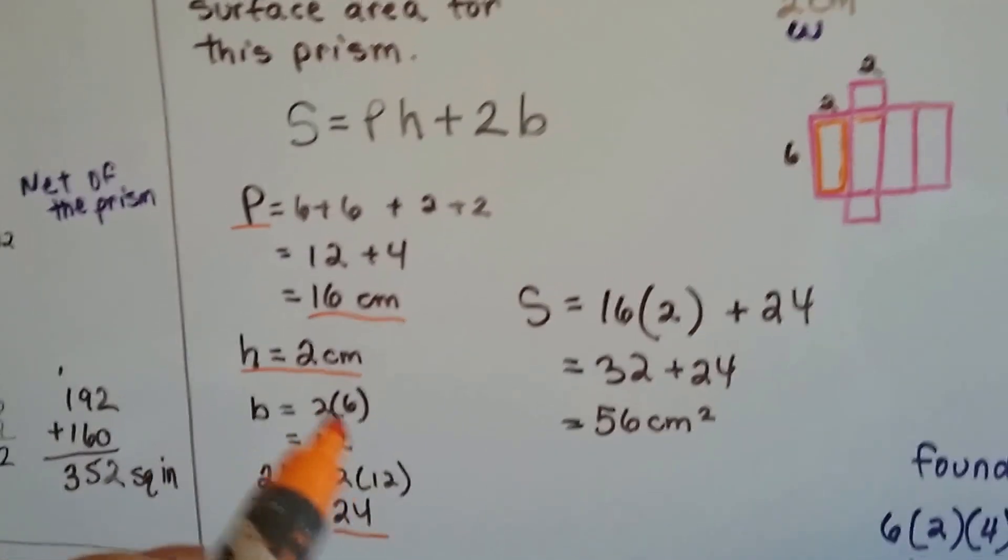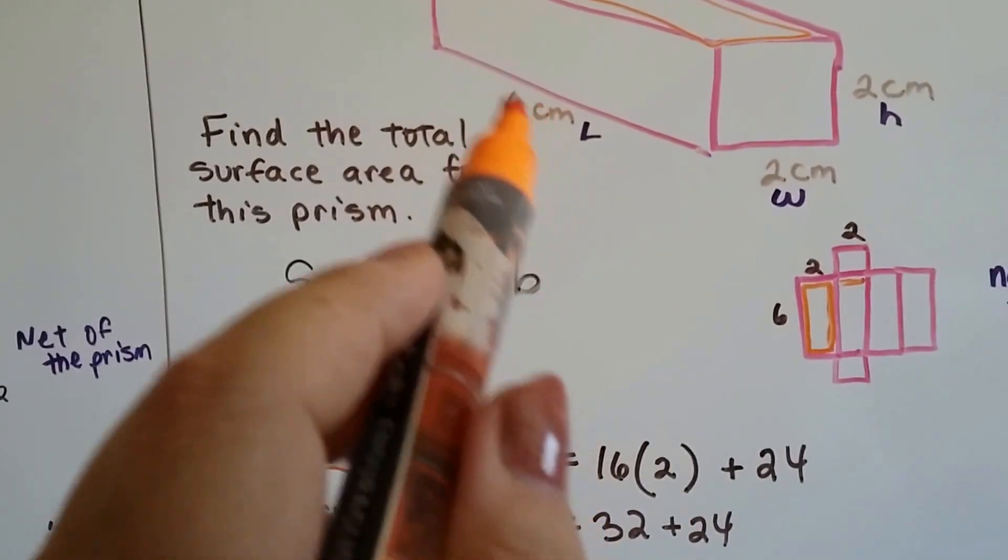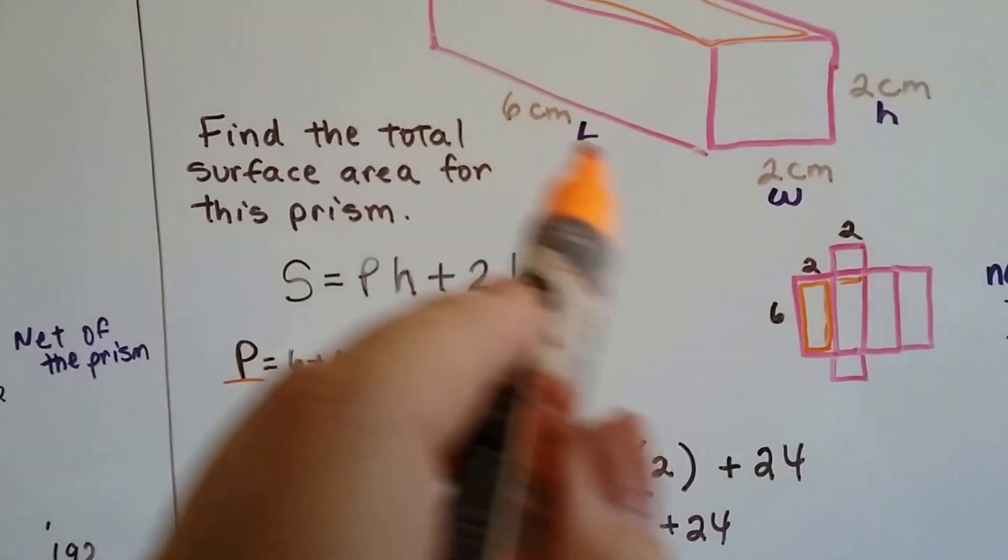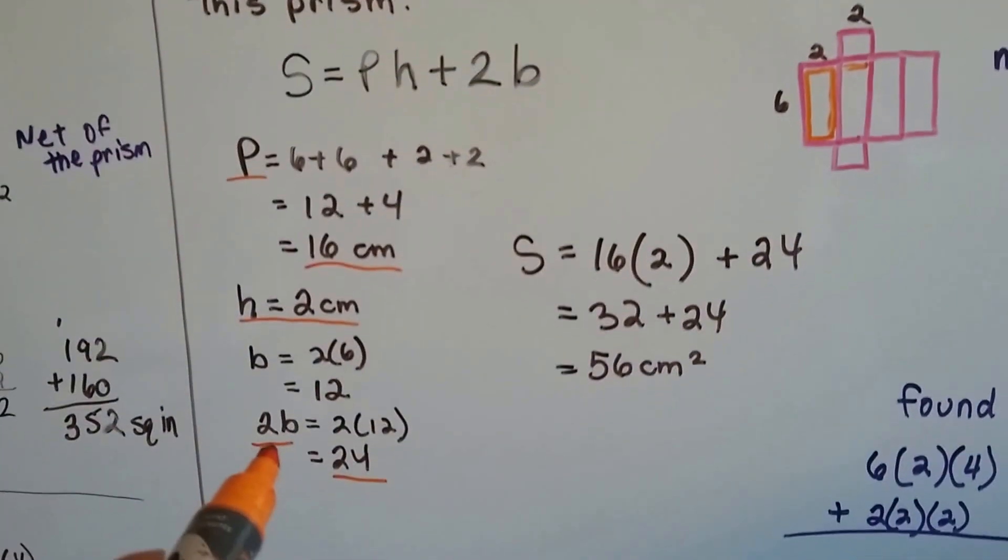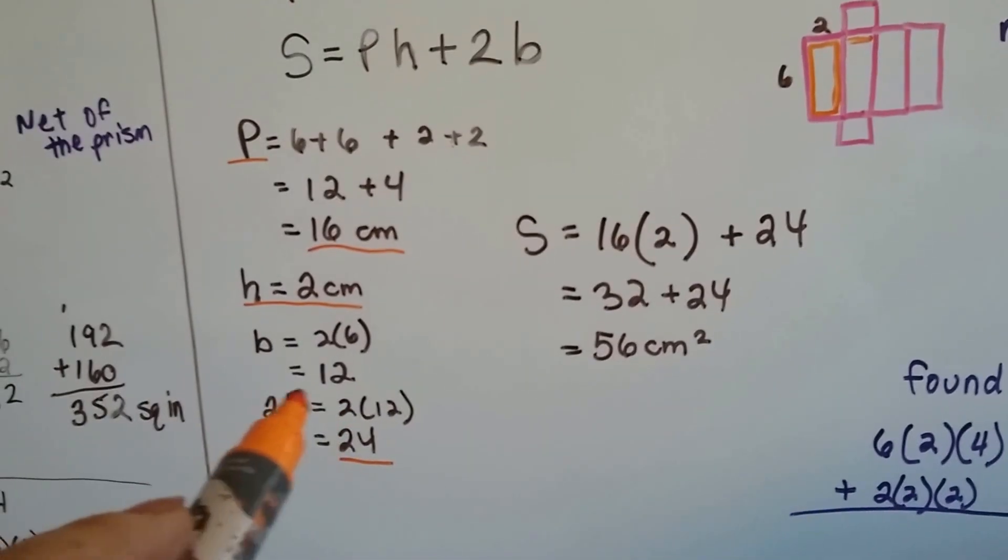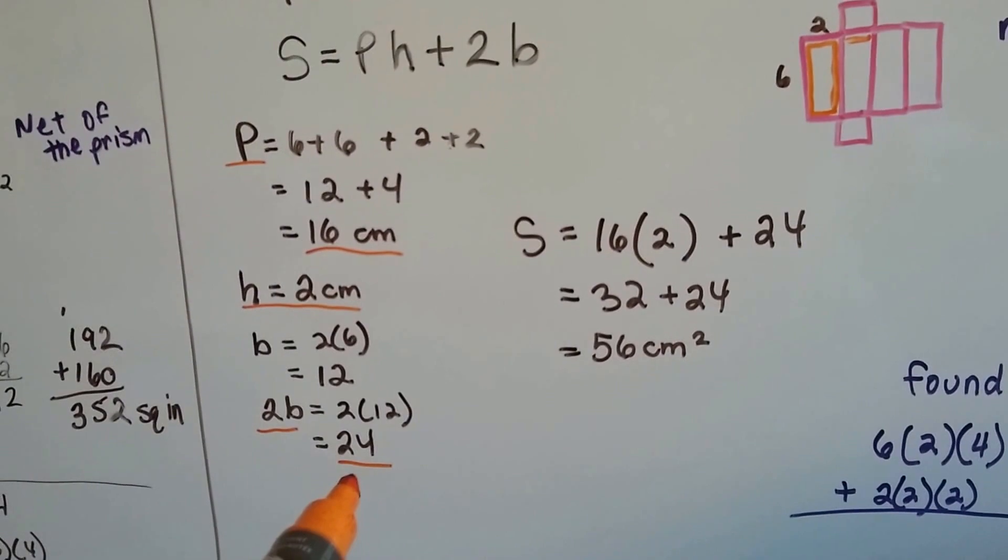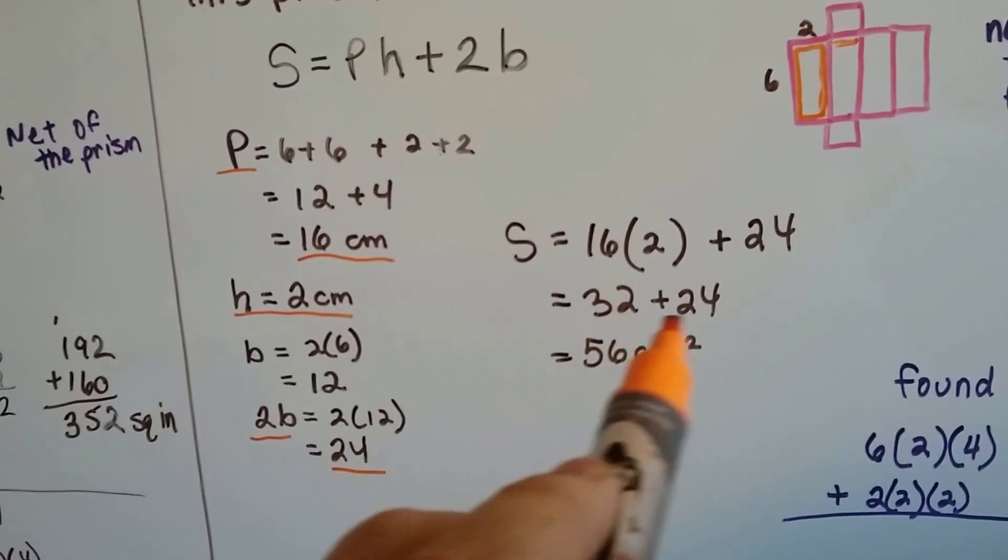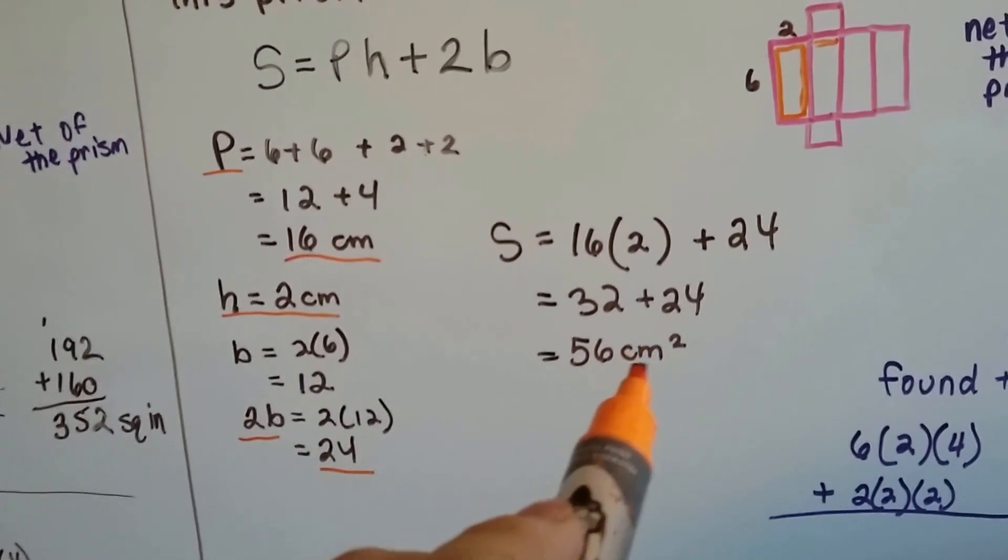Now we have to do 2 times the base. The base is the length times the width. 6 times 2 is 12. We have two of those for 2b, and that's 24. We add the 32 and the 24, and we get 56 centimeters squared.